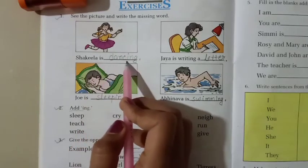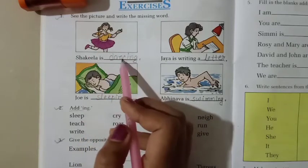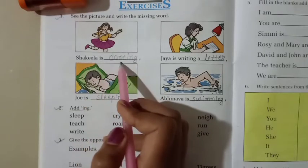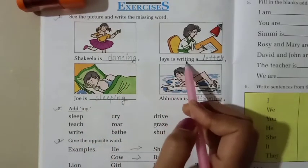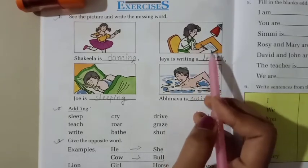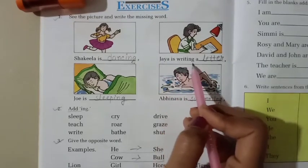Shakila is dash. What is Shakila doing? Shakila is dancing. So write here dancing. Shakila is dancing. Jaya is writing a dash. What is Jaya writing? Jaya is writing a letter. So write here letter. Jaya is writing a letter.